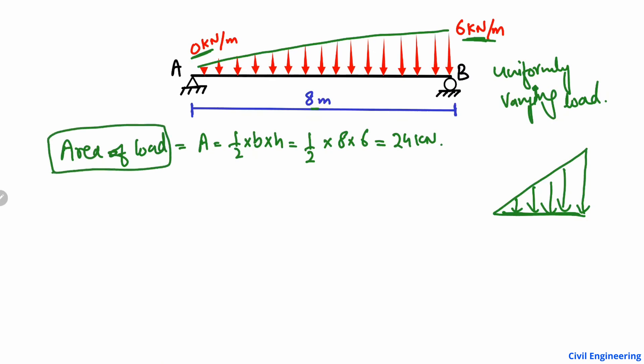The area of the load is basically the transformation of the uniformly varying load into a pointed load. We convert our load to a pointed or concentrated load. Now our load will act at 24 kilonewton, and this will act at the centroid of the triangle.